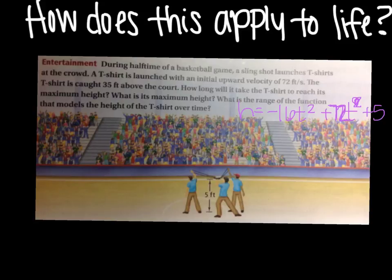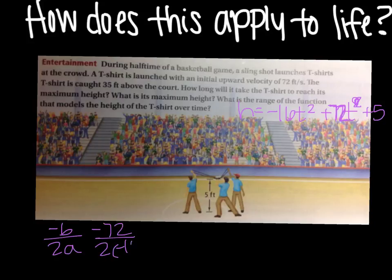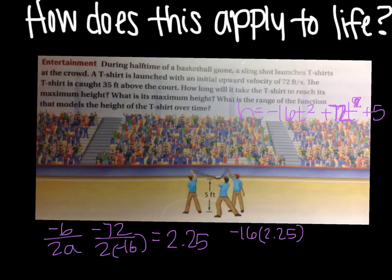Then I can use the opposite of b over 2a to find t. So the opposite of 72 over 2 times negative 16. That will give me 2.25. So that's the t-coordinate. Then I plug that in to my equation. So negative 16 times 2.25 squared plus 72 times 2.25 plus 5. So when I do all of that, that will give me y equaling 86.